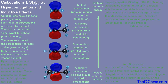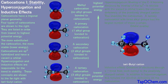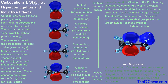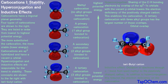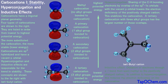So why is a more substituted carbocation lower in energy? Let's look at the tertiary carbocation on the far right to answer this question. The sharing of an electron pair from adjacent carbon-hydrogen bonds to the vacant p orbital is shown. For the tertiary carbocation with three alkyl groups, all nine CH bonds can share electrons. The sharing of electrons allows the distribution of the positive charge over many atoms, thus lowering the energy of the molecule. This is called hyperconjugation.